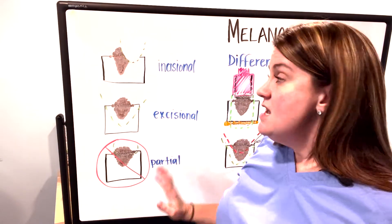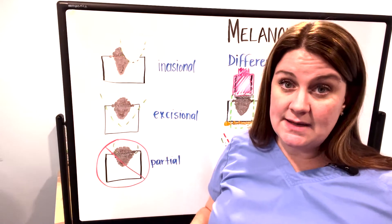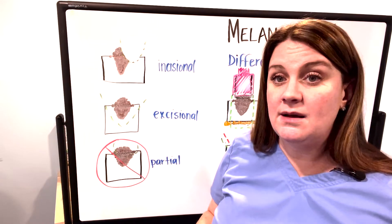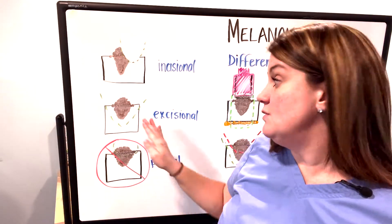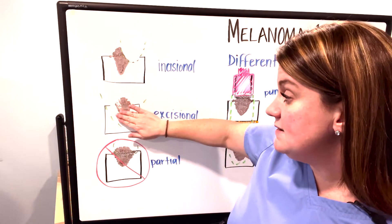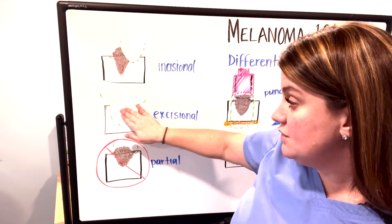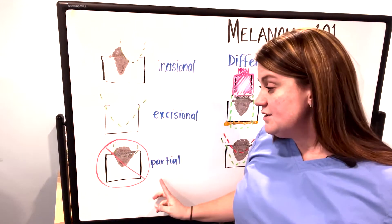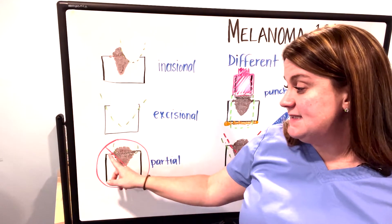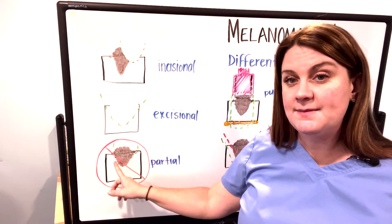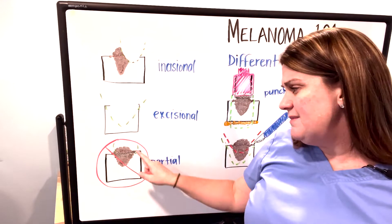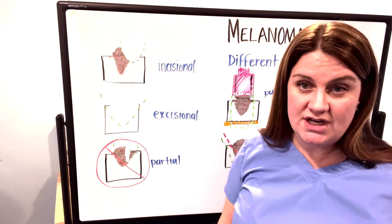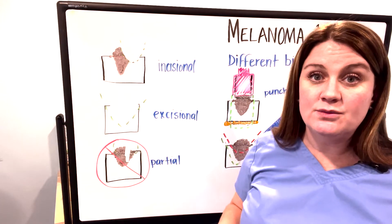That's not routinely done. An excisional biopsy is where you actually attempt to remove the entire lesion. The goal of an excisional biopsy is to remove the entire mole — truly removing all of the pigment that is atypical. What we want to stay away from is, if the entire mole looked very atypical, only biopsying one tiny piece of it. We don't want to do that, and there are a lot of reasons for that.